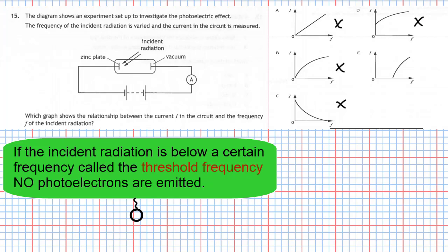Looking at graph E, for this metal, above a certain frequency you get emission of photoelectrons and therefore a photoelectric current. But below this frequency you get no current and no photoelectrons emitted. That point is called the threshold frequency — any radiation below that frequency shone on that metal will not produce photoelectrons. So our answer is 15E.